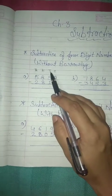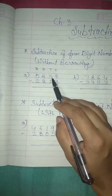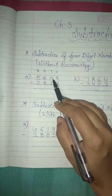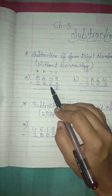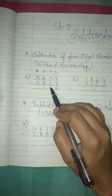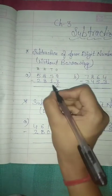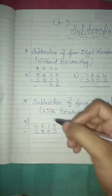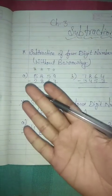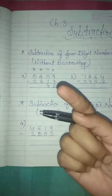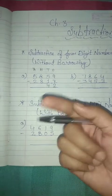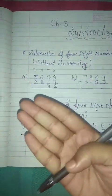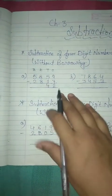Then go to your next place — tens place. The tens place has numbers 5 and 1. So 5 minus 1 is equal to — tell me. Yes, 4. Same as: you have 5 toffees and you gave 1 to your brother or sister. So how much are you left with? 4 toffees.